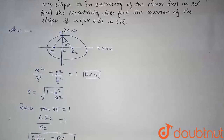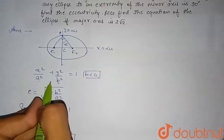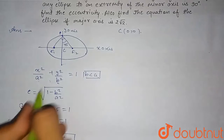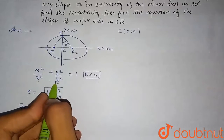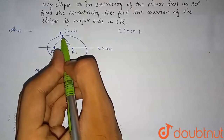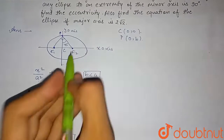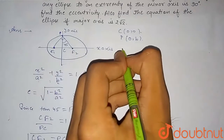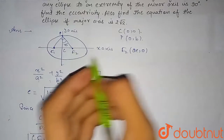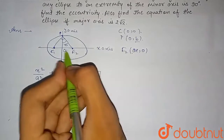We locate the coordinates of F2 and P with respect to the center. The center C is the origin, so C = (0, 0). The extremity of the minor axis P is found by substituting x = 0 in the ellipse equation, giving P = (0, b). The focus F2 has coordinates (ae, 0). Therefore, PC = b and CF2 = ae.